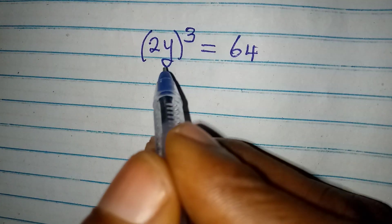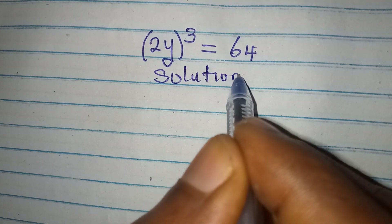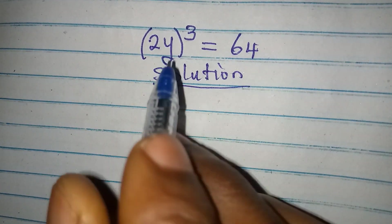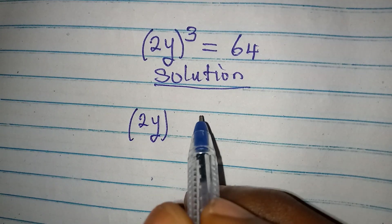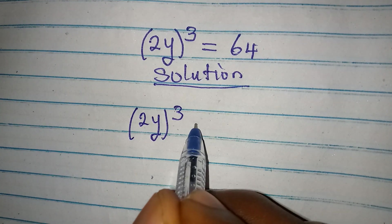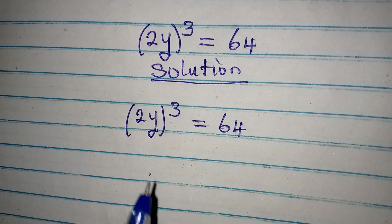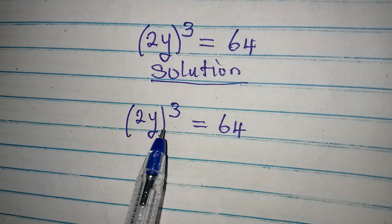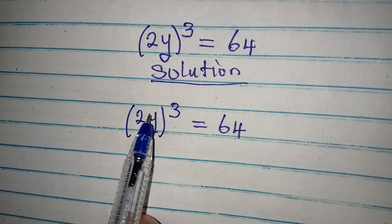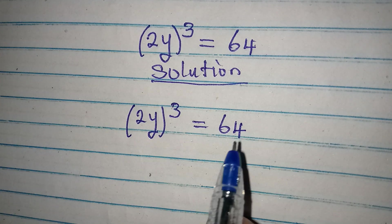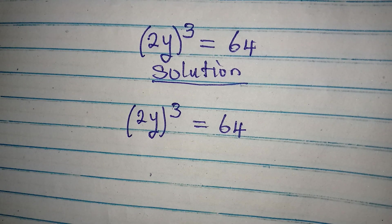Hello everyone. Let's provide a full solution to this problem: we have (2y)³ = 64. If you take the cube root of both sides, you will not get the complete solution.